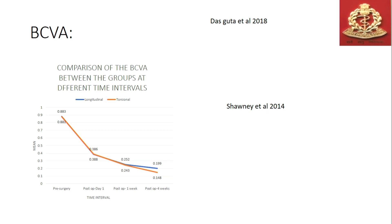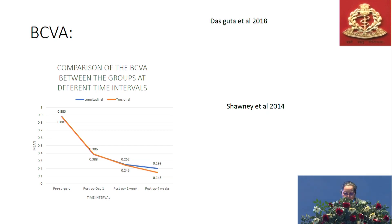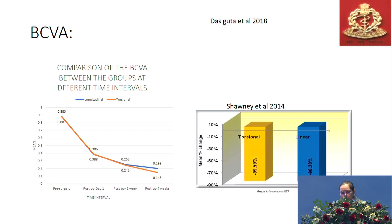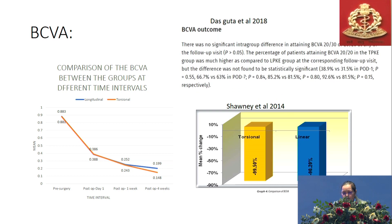For BCVA, the logMAR value decreased more in the torsional group, representing a better visual outcome, which was statistically significant with a p-value of less than 0.01. This was corroborated by a 2014 study where the BCVA difference was again significantly different between the two groups. The 2018 study, although not showing a significant difference, had a higher percentage of patients attaining BCVA of 20/20 in the torsional group compared to the longitudinal group.